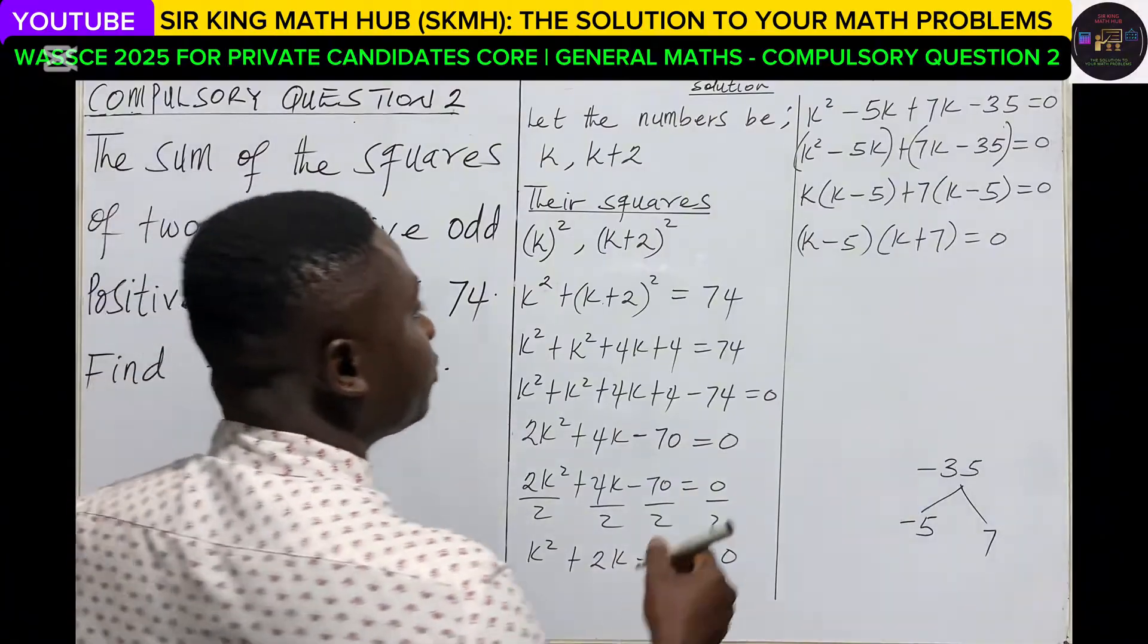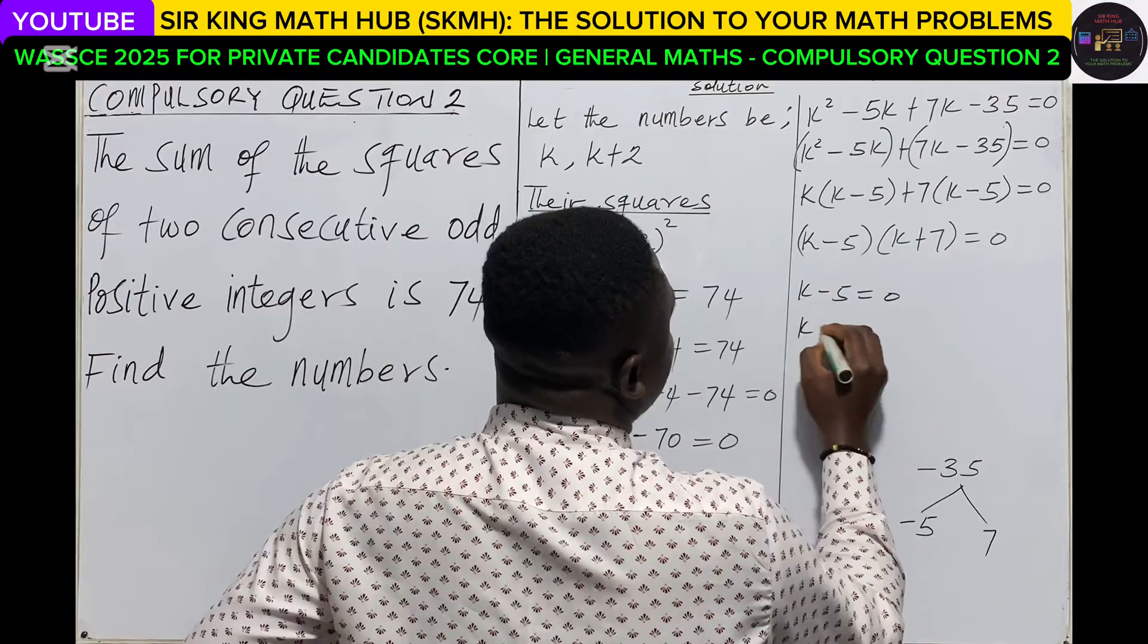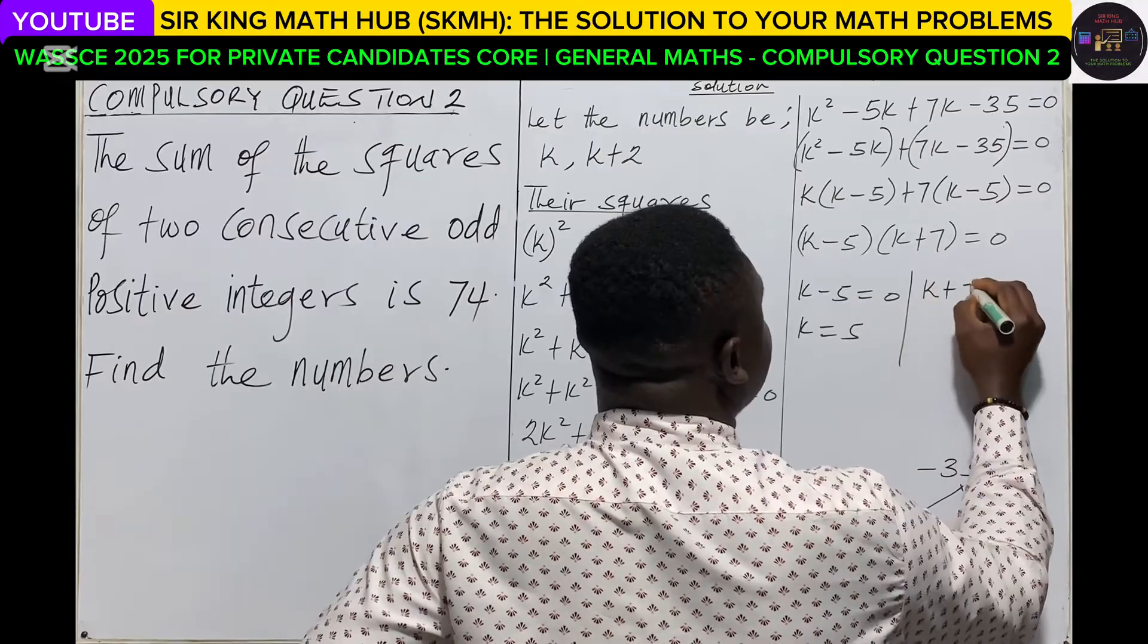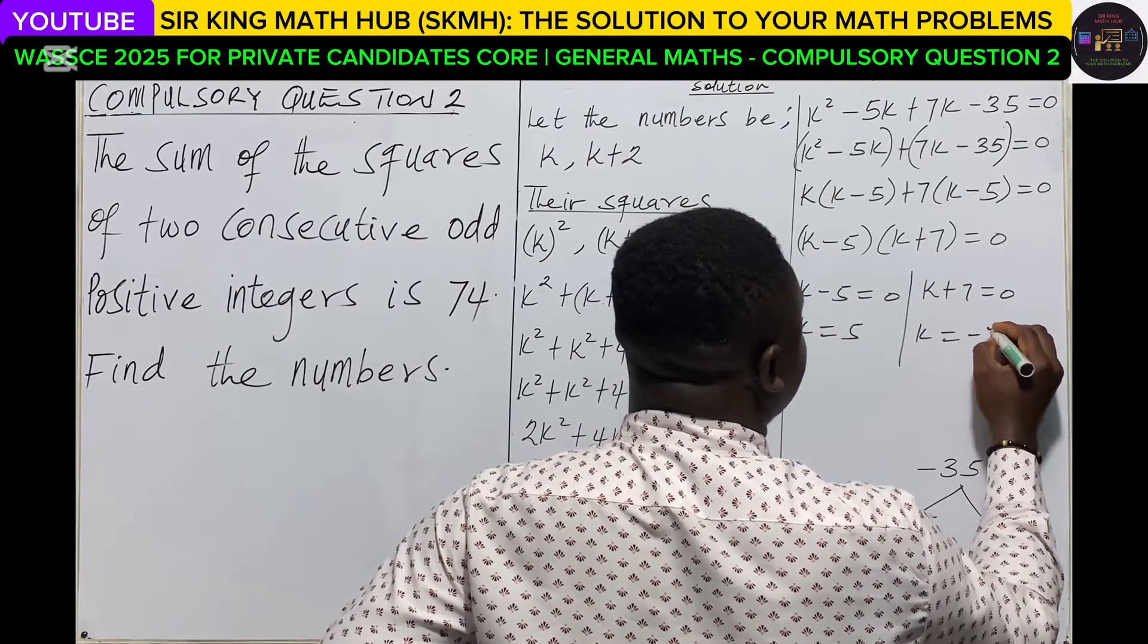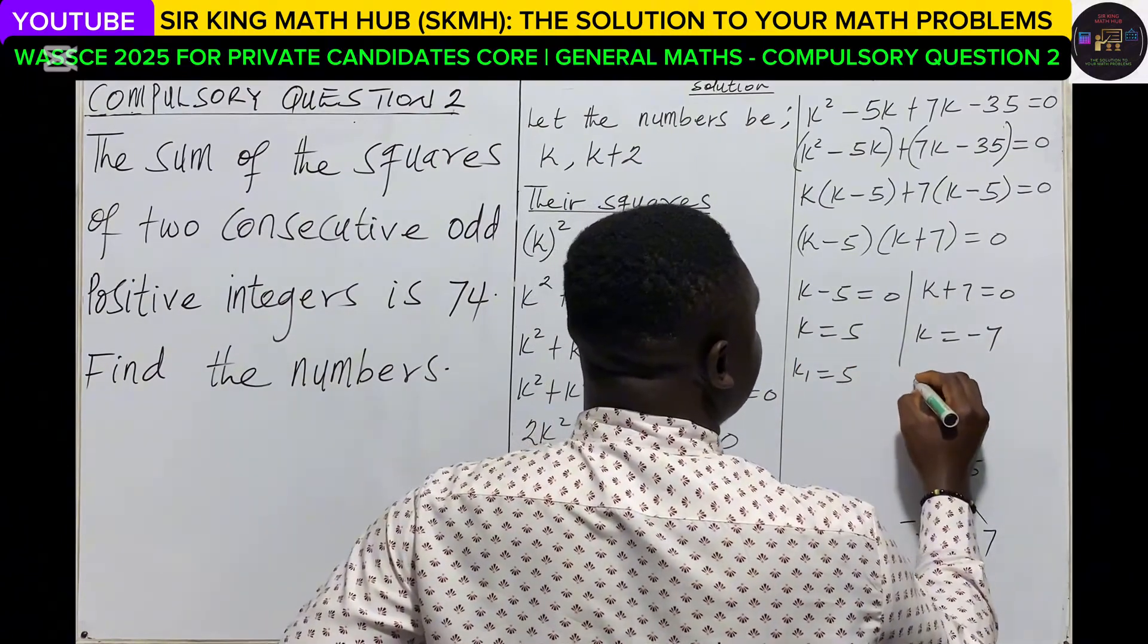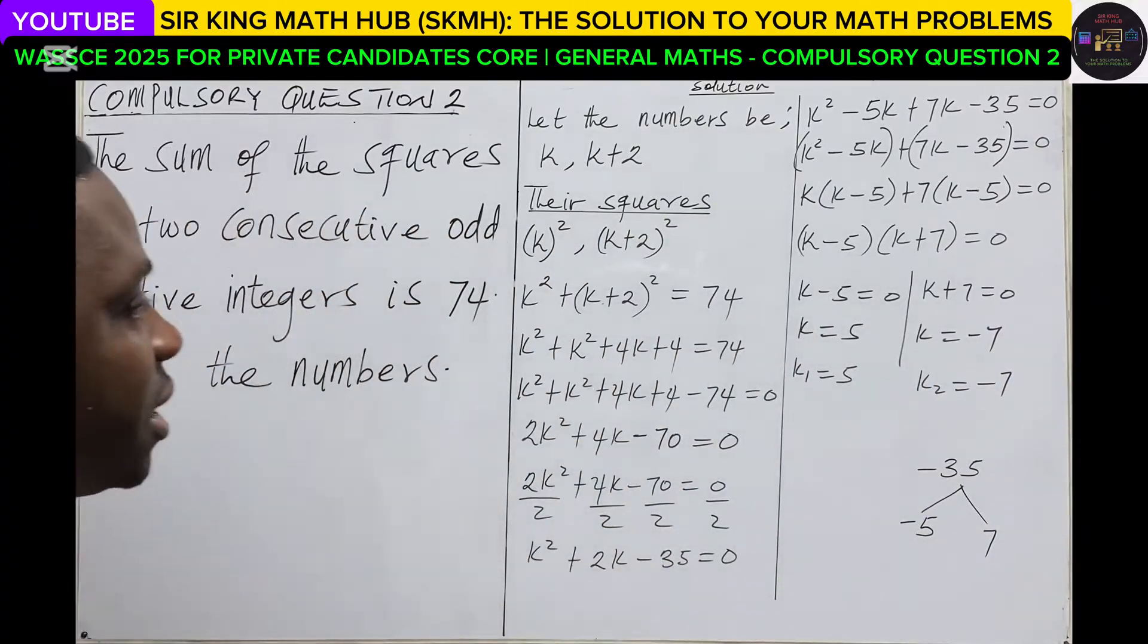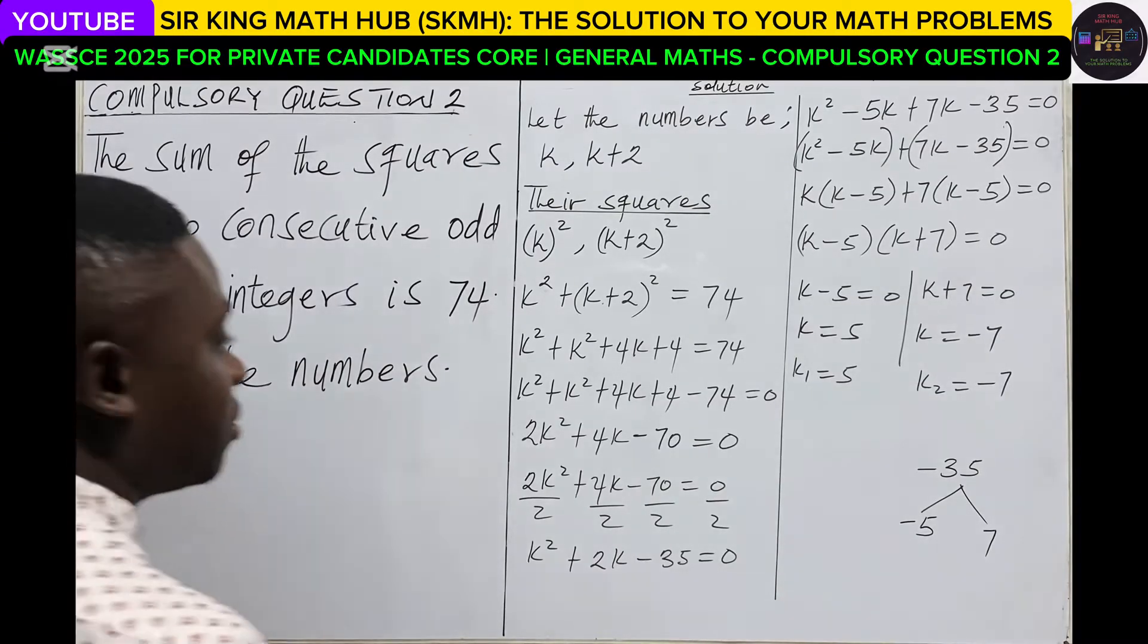In the first factor, k minus 5 is equal to zero, so k is equal to 5. Second factor, k plus 7 is equal to zero, so k is equal to negative 7. So we have k1 as positive 5, and the second value of k is minus 7. But the question was specific, we are looking at positive integers.